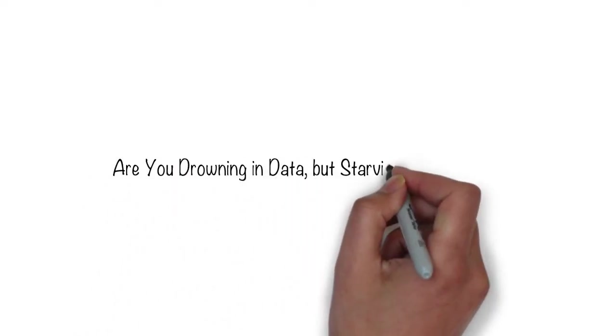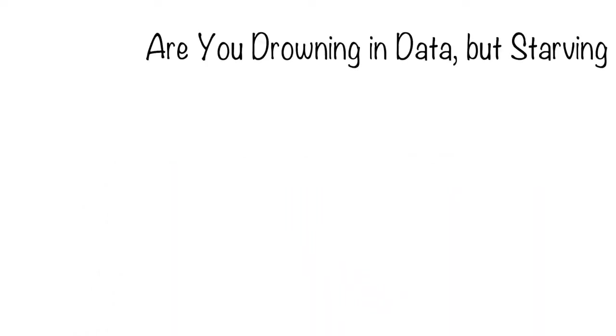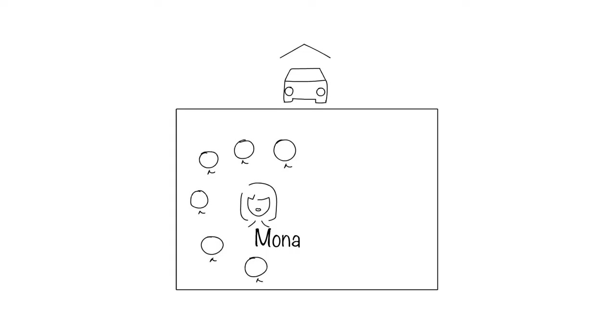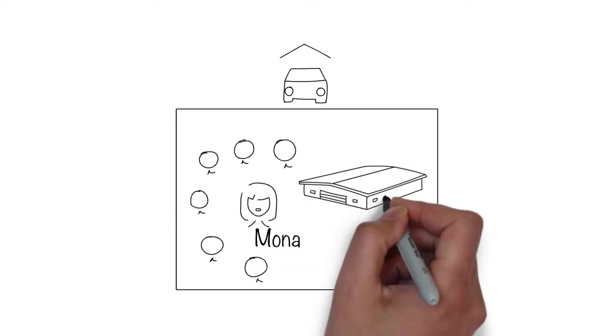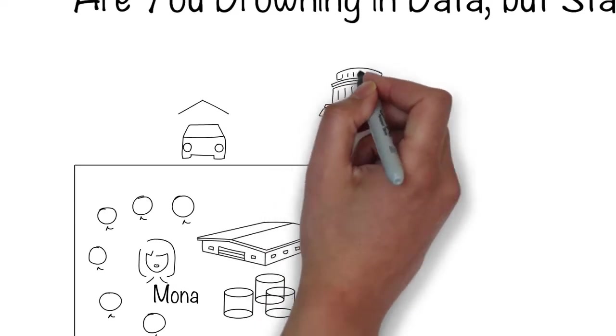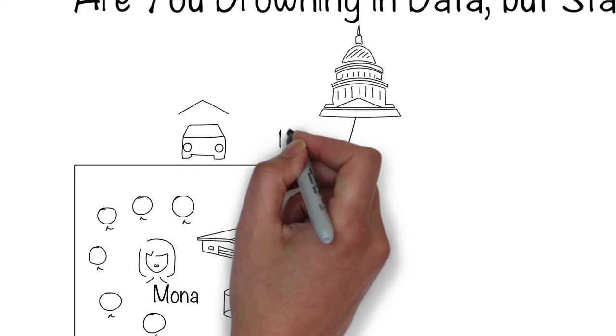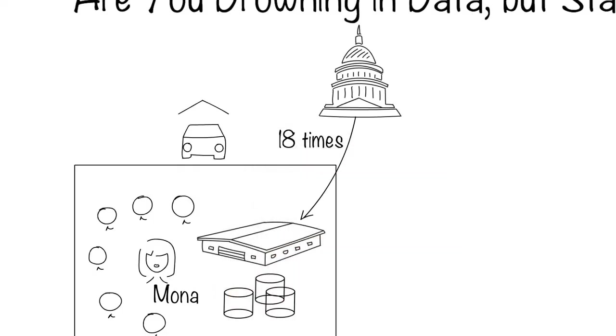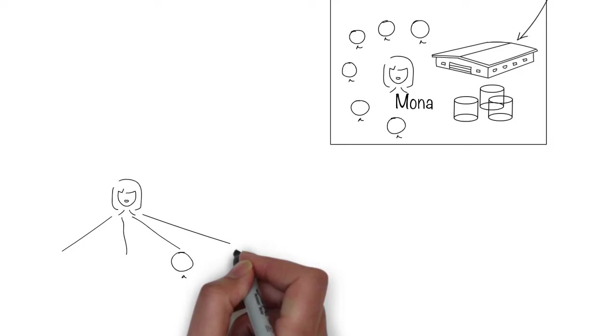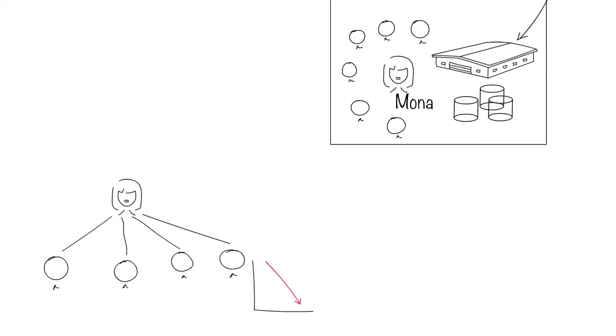Are you drowning in data but starving for insights? Engineers at this insurance company walk their CEO Mona through a highly secure data center, telling her that the data stored here is 18 times more than what the Library of Congress holds. Yet Mona is frustrated. Her direct reports tell her that they're not able to extract much information from this data to make day-to-day strategic decisions.